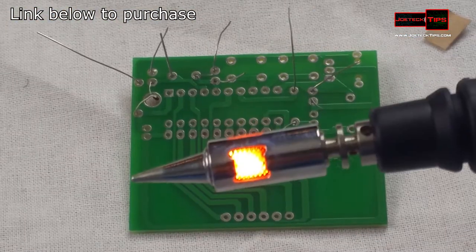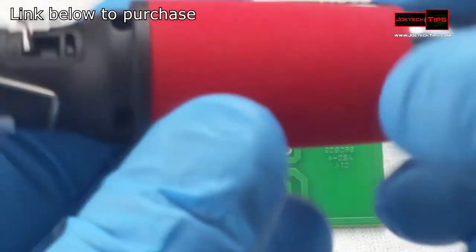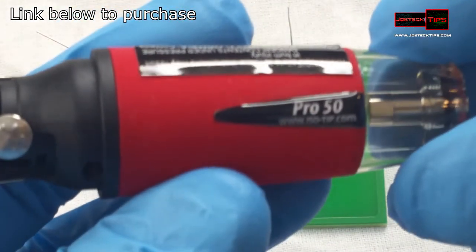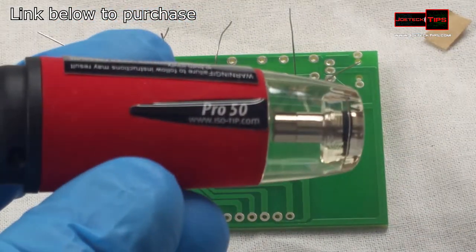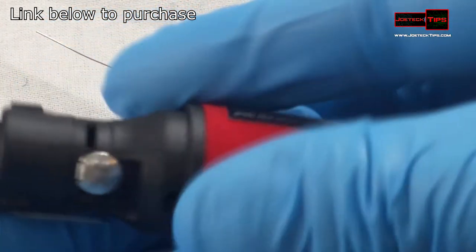Just so you guys are aware, I'm using a soldering iron called Pro 50. This will be in the description below. This is a butane soldering iron.